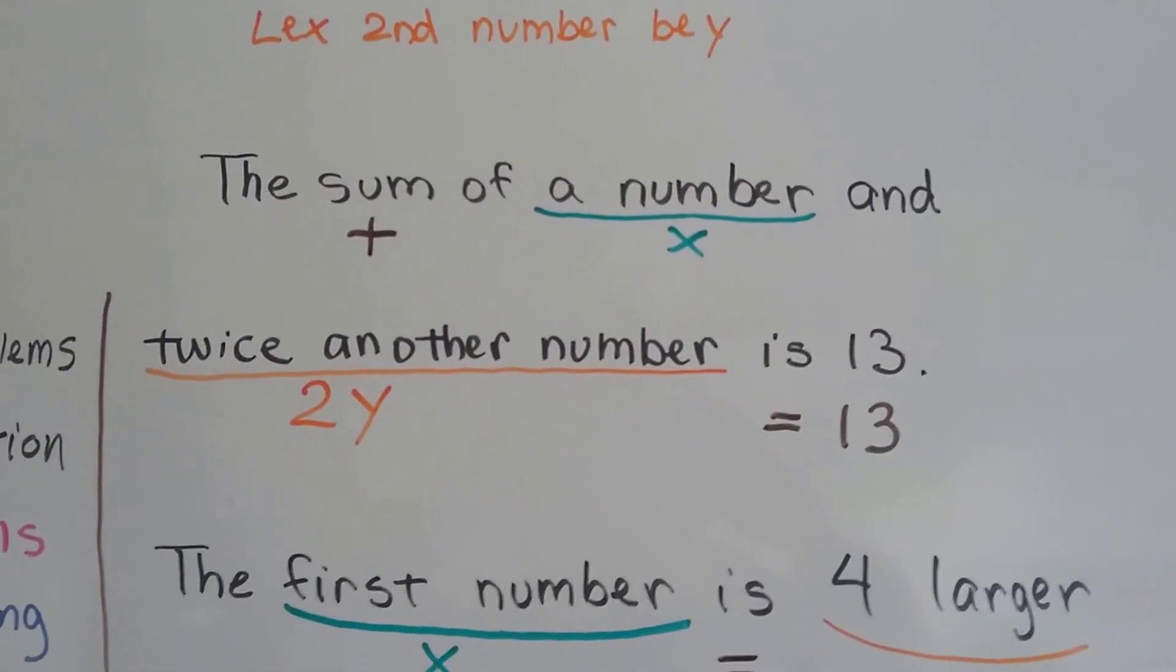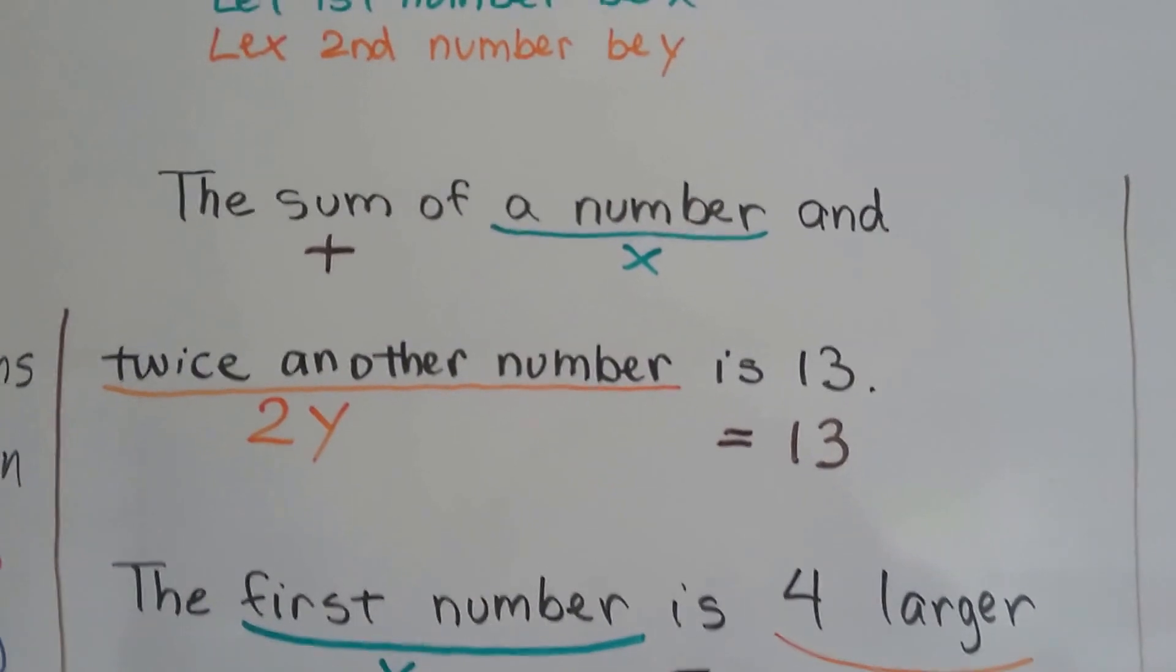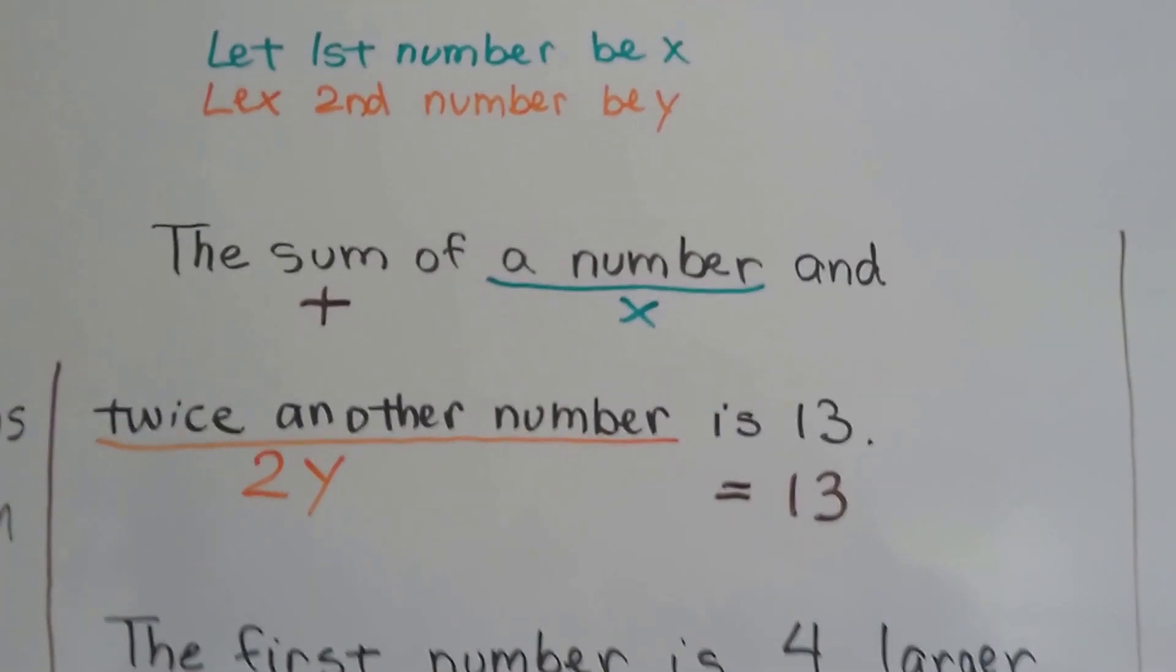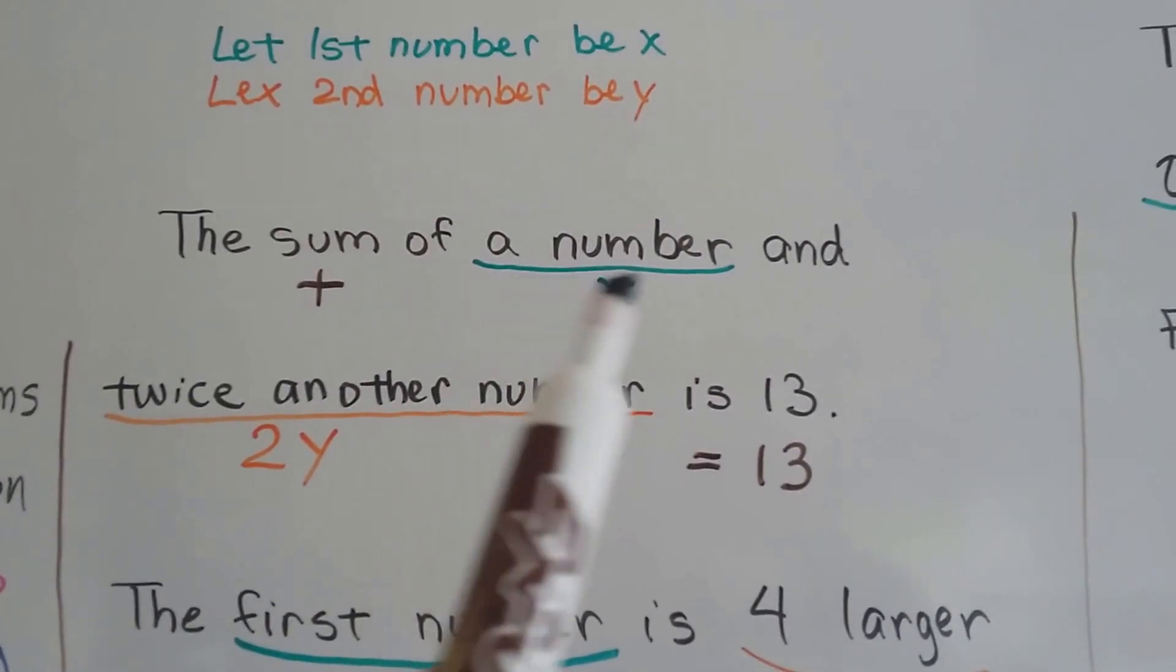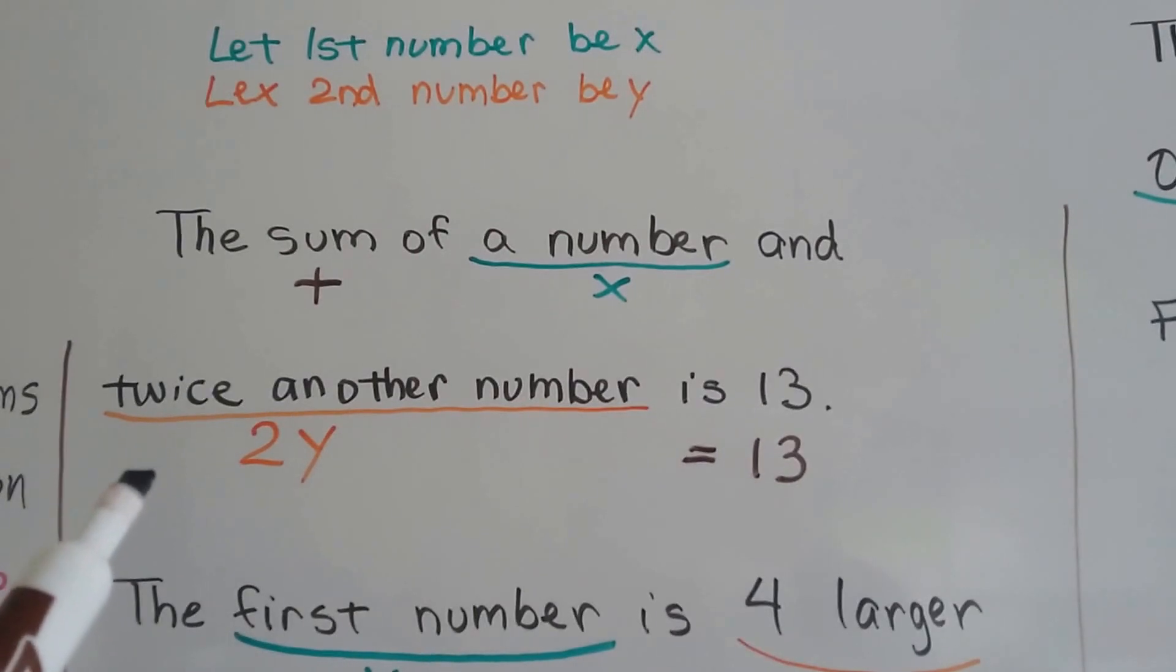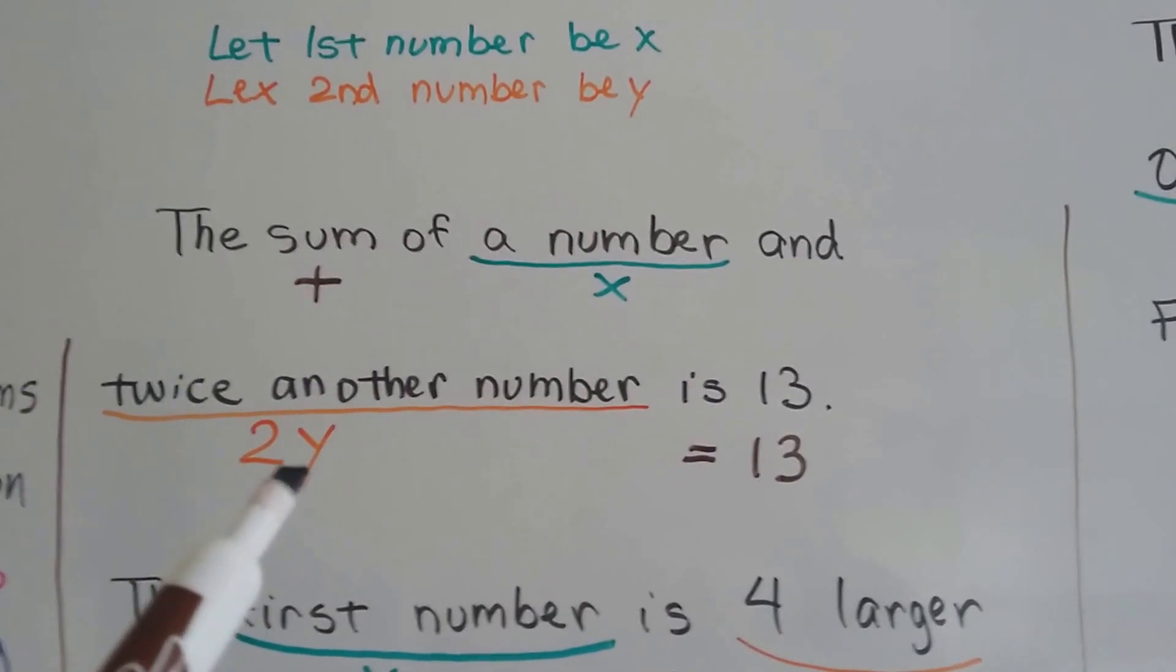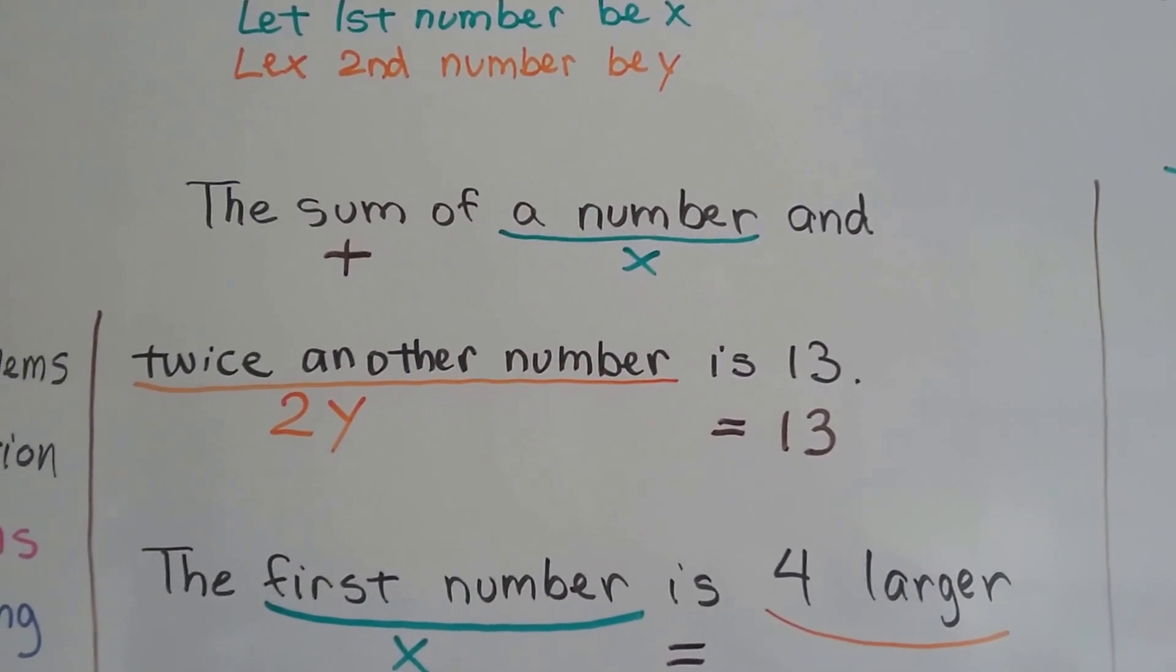So the sum of a number and twice another number is 13. So the first number is going to be x. So the sum, that means we're going to use a plus sign, of a number that's going to be x and twice another number. So that's going to be two times y. And it's going to equal 13. So now we've got our first equation.